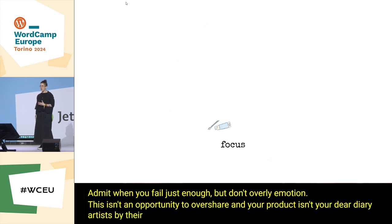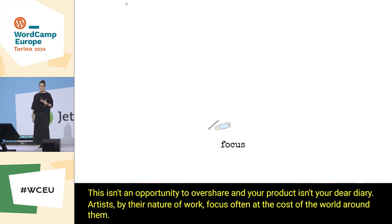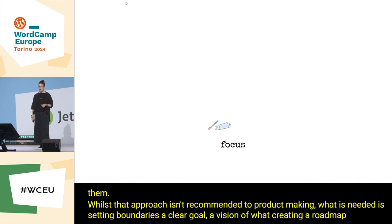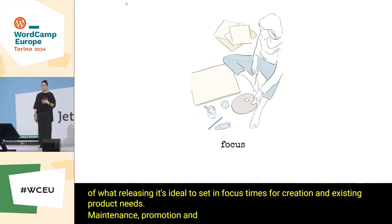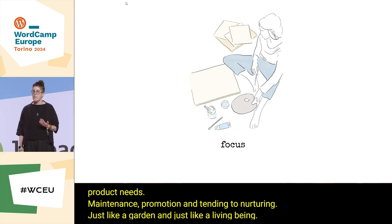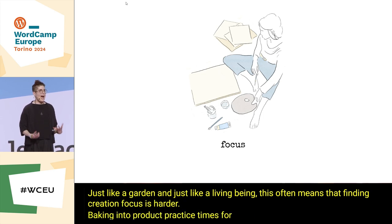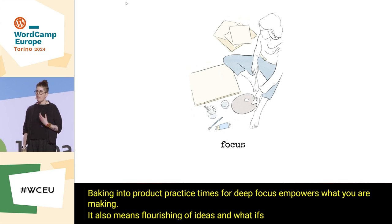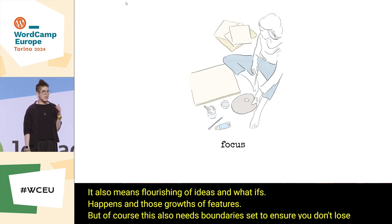Artists by their nature focus, often at the cost of the world around them. Whilst that approach isn't recommended for product making, what is needed is setting boundaries — a clear goal, a vision of what's being created, a roadmap, and clarity of what you're releasing. It's ideal to set focus times for creation. An existing product needs maintenance, promotion, and tending to — nurturing, just like a garden. Finding creation focus is harder, but baking deep focus times into product practice empowers what you are making and allows flourishing of ideas, features, and what-ifs.